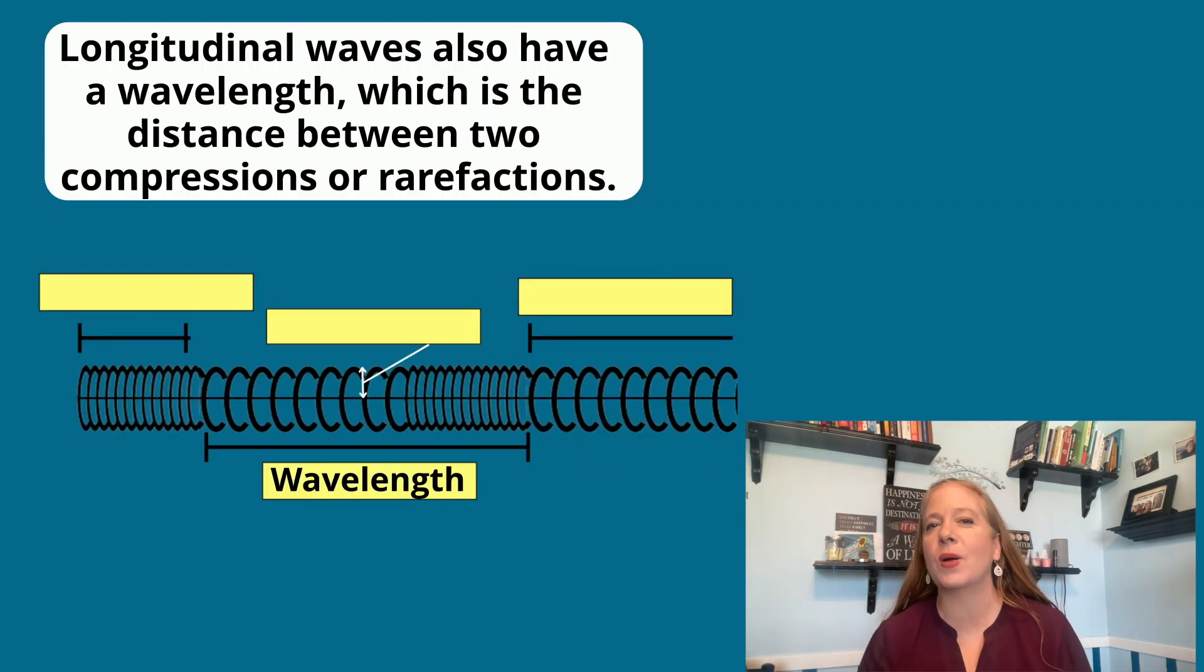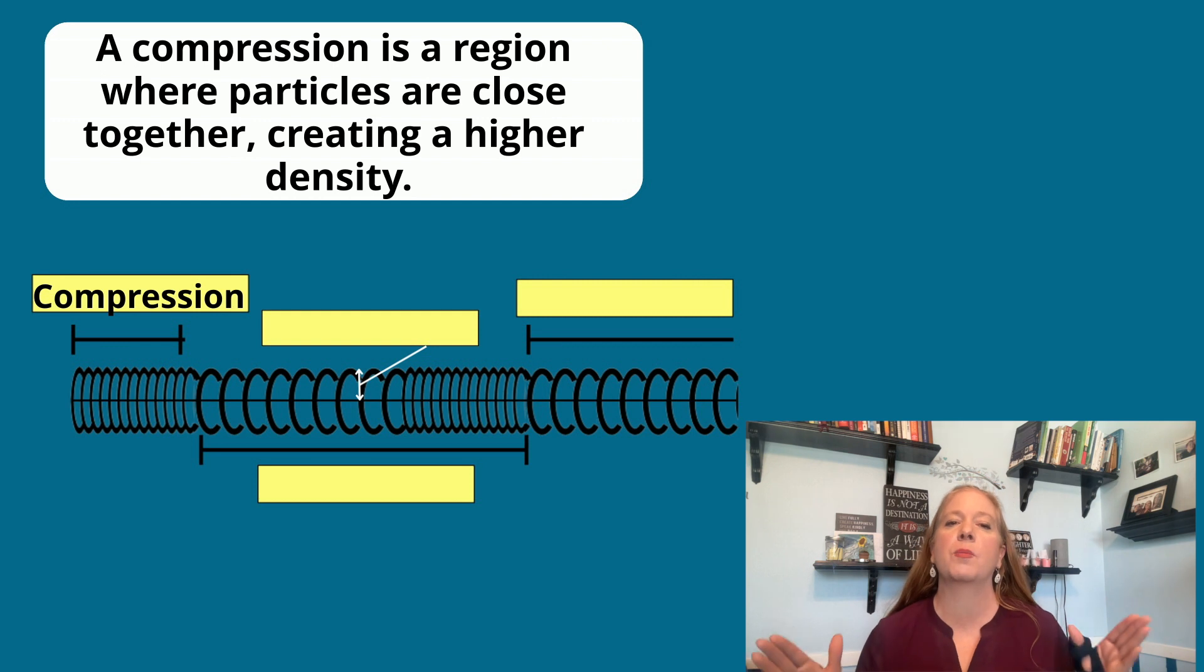Longitudinal waves also have a wavelength, which is the distance between two compressions or rarefractions. A compression is a region where the particles are close together, creating a higher density.